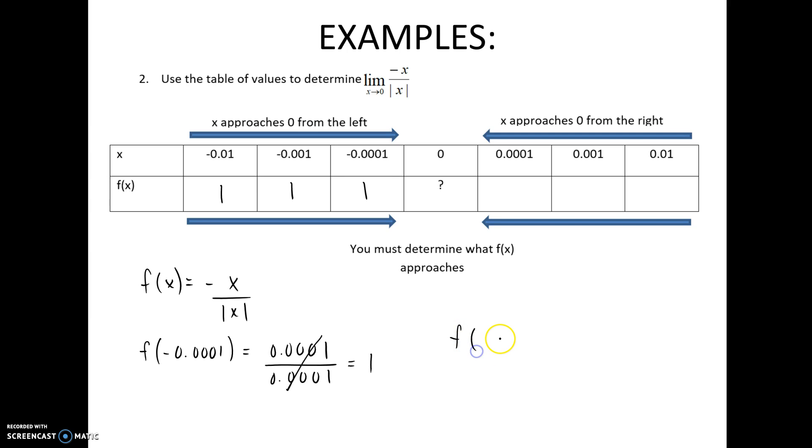So let's think about, as I approach where my values are to the right of zero, I take the opposite of my input value, and then I divide it by its positive self. So what are all my y values going to approach from the right-hand side? No matter my input, my output's always going to be negative one. So looking at this table of values, what does my function approach?